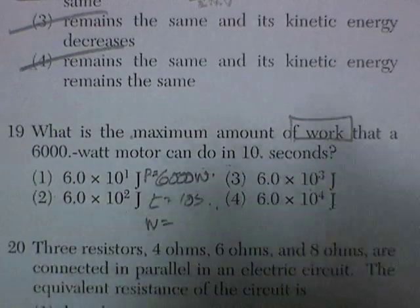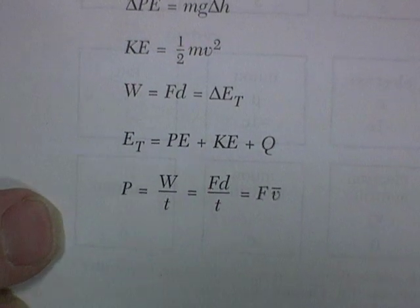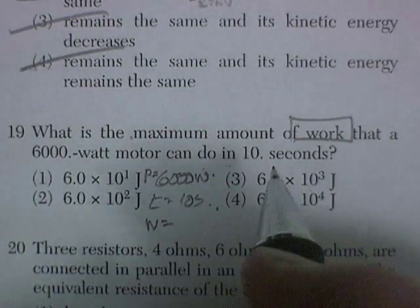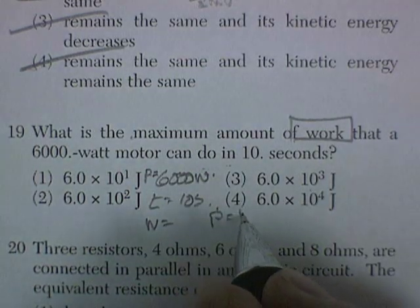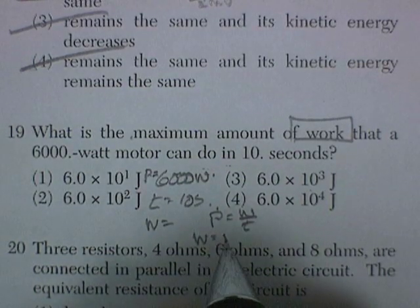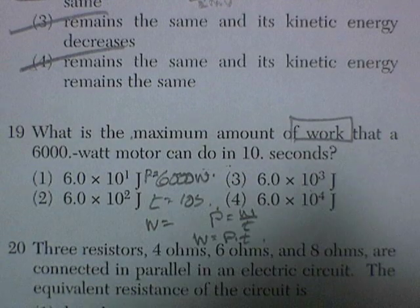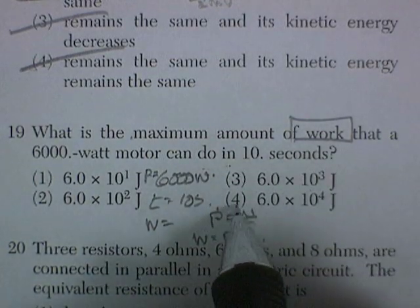So we go to the formula for power, and it says it's work divided by time. So power equals work divided by time. Work is equal to power times time. So 6,000 times 10 is 60,000.